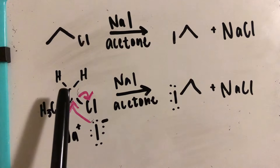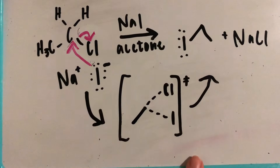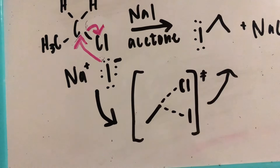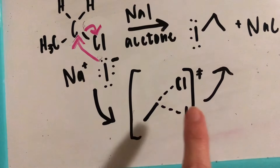What I have drawn here is actually the transition state for the Finkelstein reaction, because SN2 reactions don't have intermediates — they only have transition states because it all happens in one step. You'll see that the carbon isn't completely bonded to either the chlorine or the iodine.